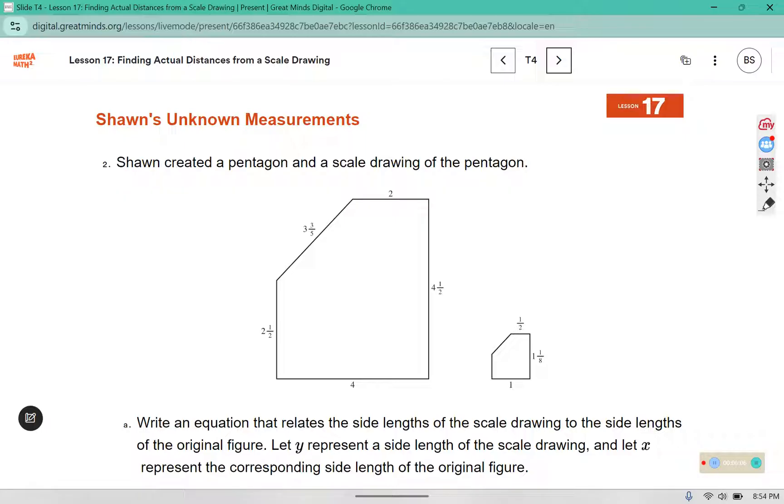Shawn created a pentagon and a scale drawing of the pentagon. Write an equation that relates the side lengths of the scale drawing to the side lengths of the original figure. Let y represent the side lengths of the scale drawing and x represent the corresponding side length of the original figure. So our job is to figure out, first things first, the scale factor.